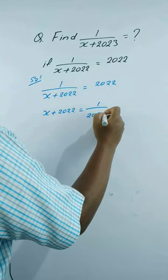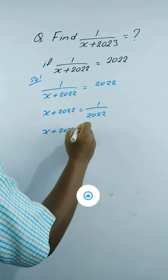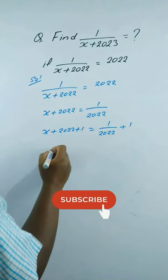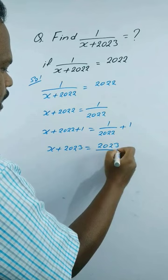On adding 1 to both sides, we get x plus 2022 plus 1 is equal to 1 by 2022 plus 1. This gives x plus 2023 is equal to 2023 by 2022.